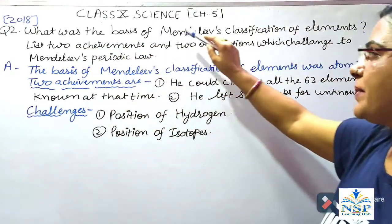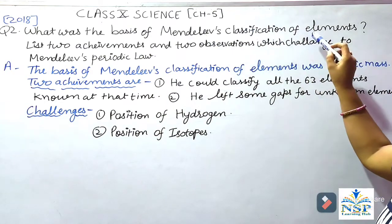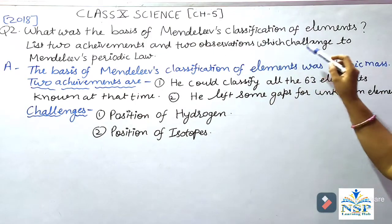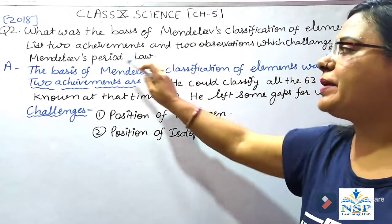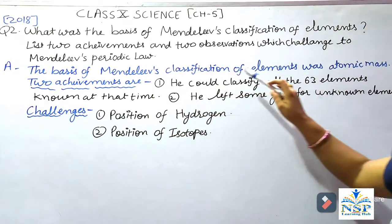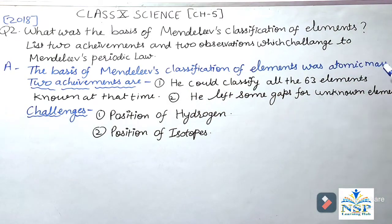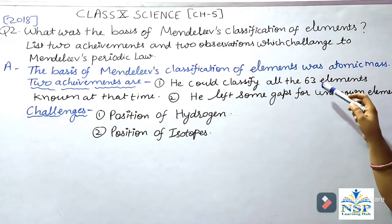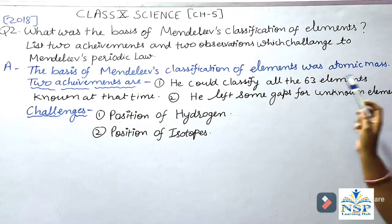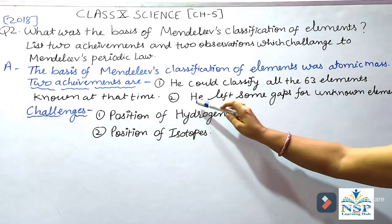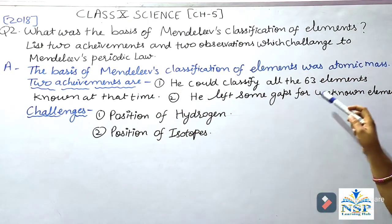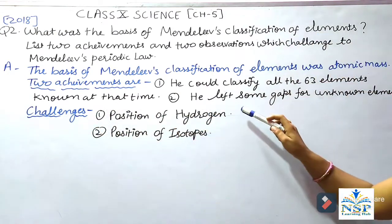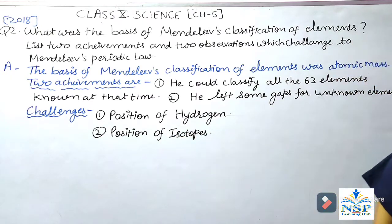Question No. 2: What was the basis of Mendeleev's classification of elements? List two achievements and two challenges to Mendeleev's periodic law. The basis of Mendeleev's classification was atomic mass. Two achievements: he could classify all 63 elements known at that time, and he left some gaps for unknown elements. Challenges: position of hydrogen and position of isotopes.